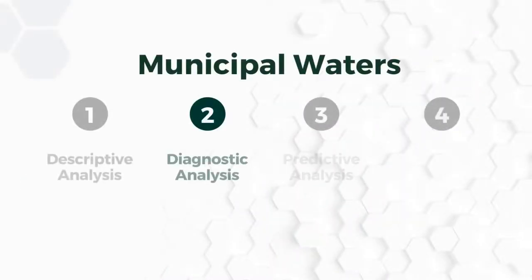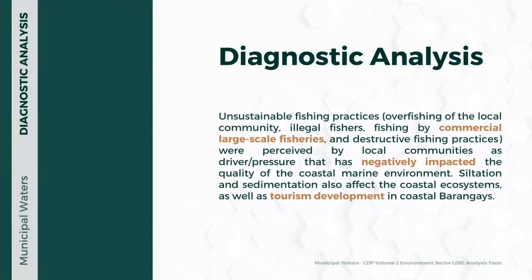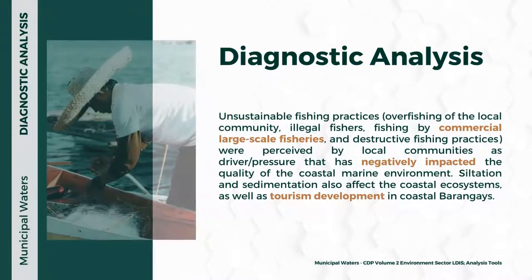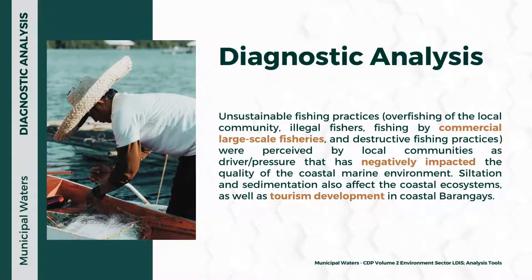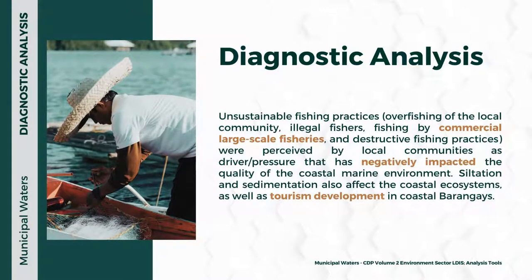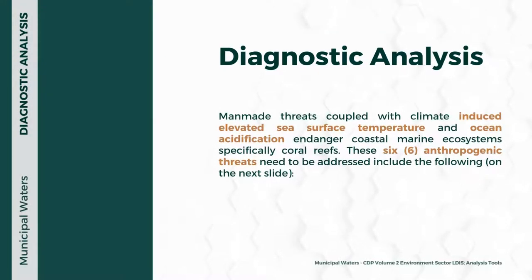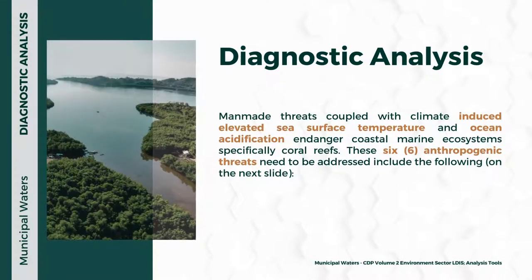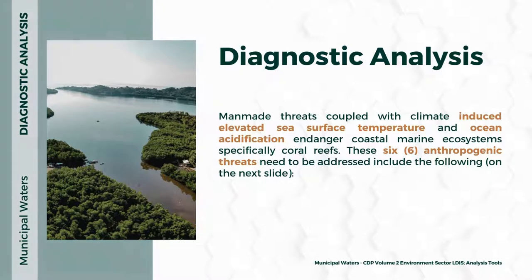For the diagnostic analysis, unsustainable fishing practices like overfishing, illegal fishing by commercial large-scale fisheries, and destructive fishing practices were identified by local communities as drivers negatively impacting the quality of the coastal marine environment. Siltation and sedimentation also affect coastal ecosystems and tourism development in coastal barangays. Man-made threats coupled with climate-induced elevated sea surface temperature and ocean acidification endangered coastal marine ecosystems, specifically coral reefs. These six anthropogenic threats need to be addressed.